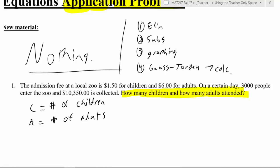So if our variables C and A represent number of children and number of adults attending, then what we need to do is look through the problem for things that relate those two variables, things that relate children and adults. And the way this problem is written, it's actually relatively simple to see because they're built together. They're in the same sentence. The admission fee is $1.50 for children and $6 for adults. So therefore we have a dollars relationship.